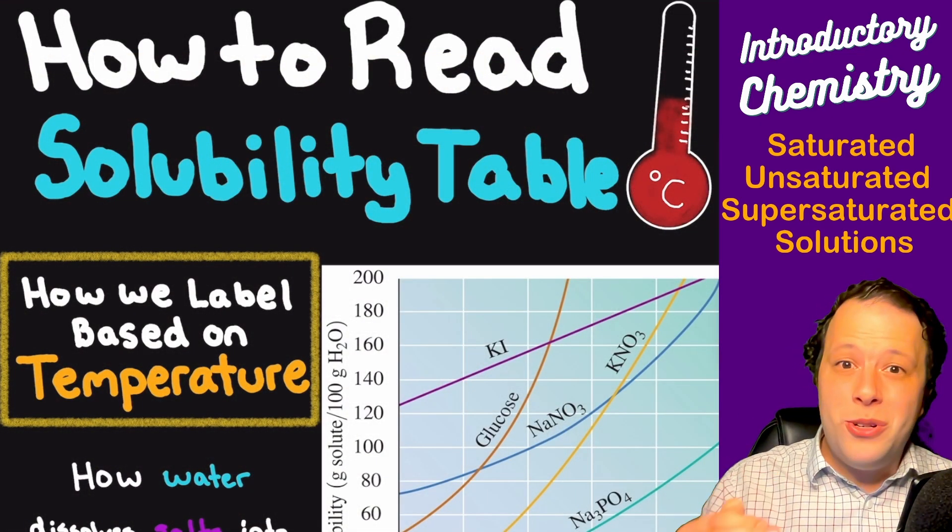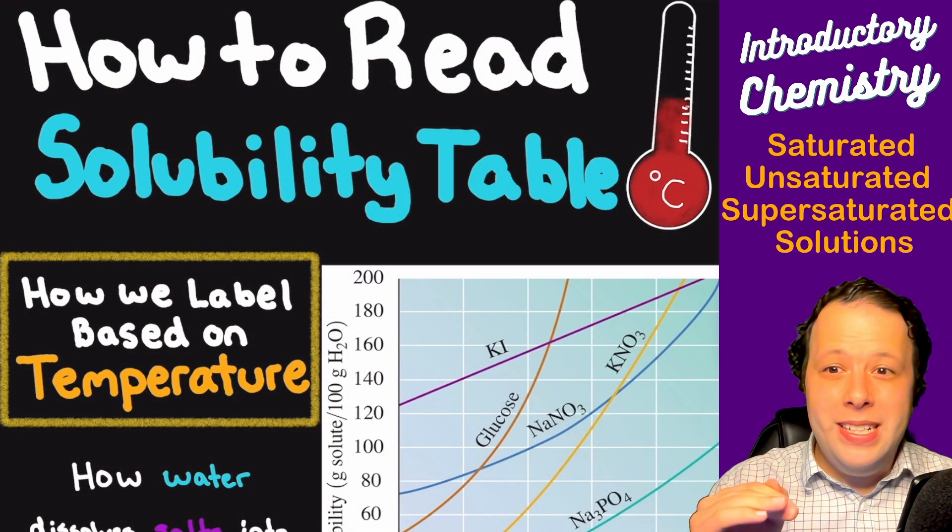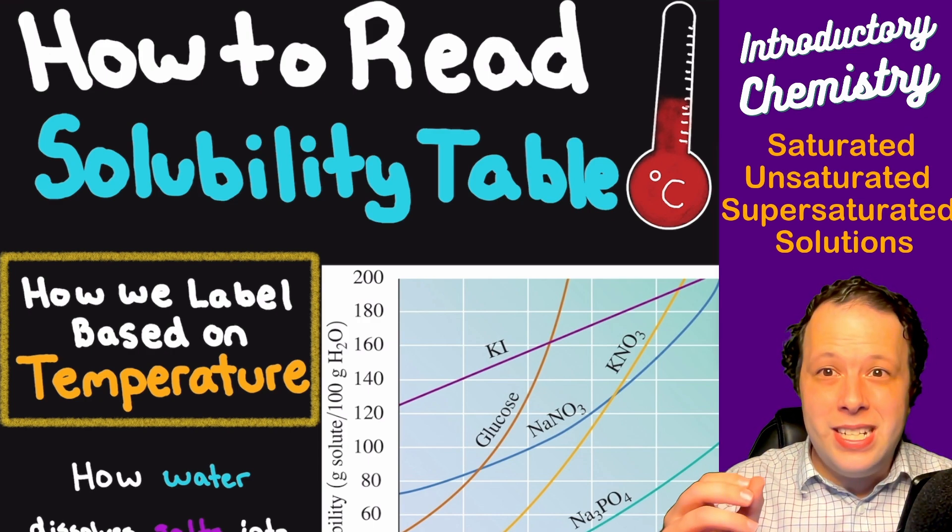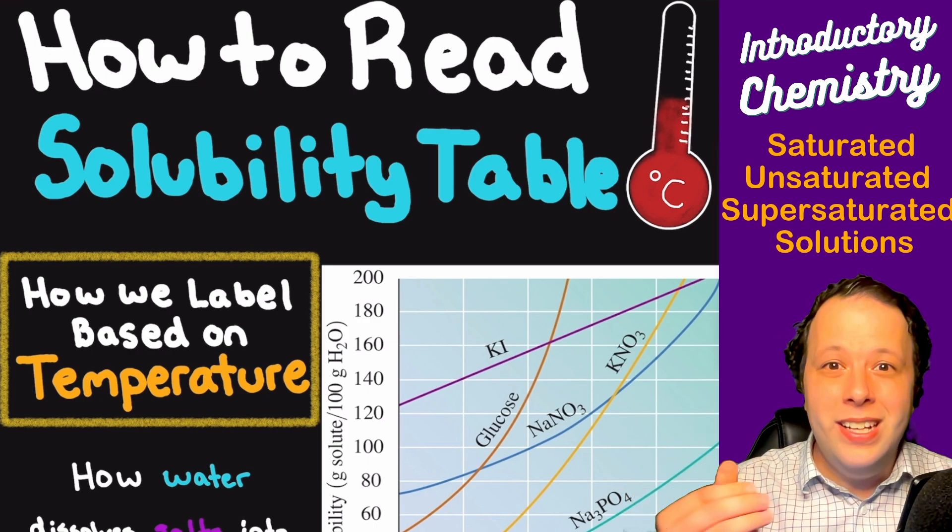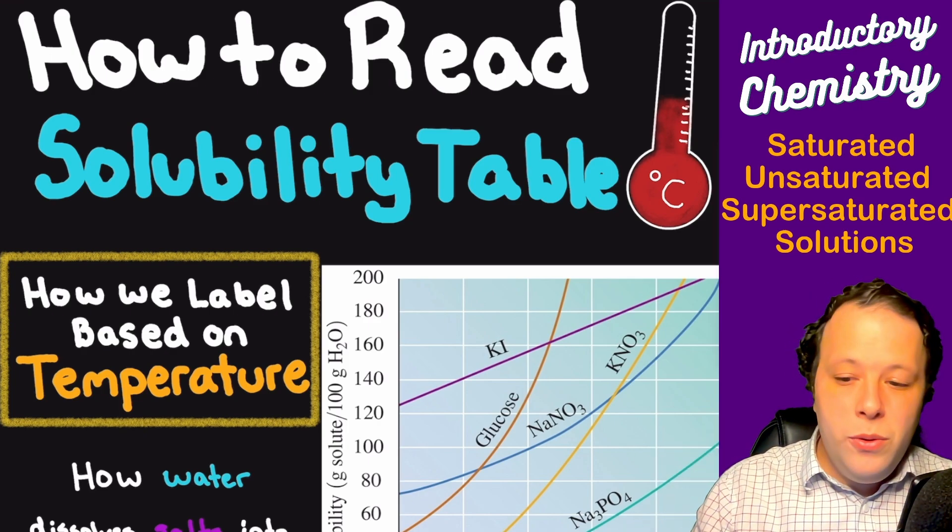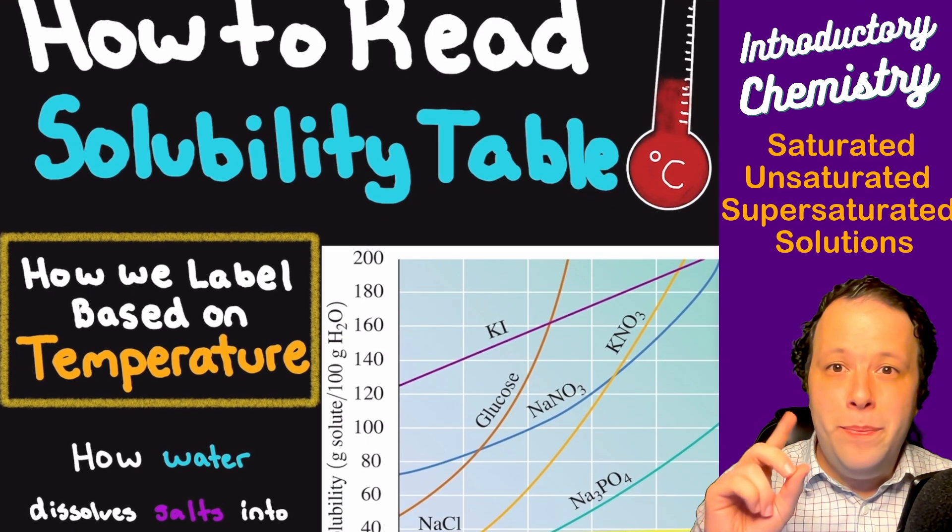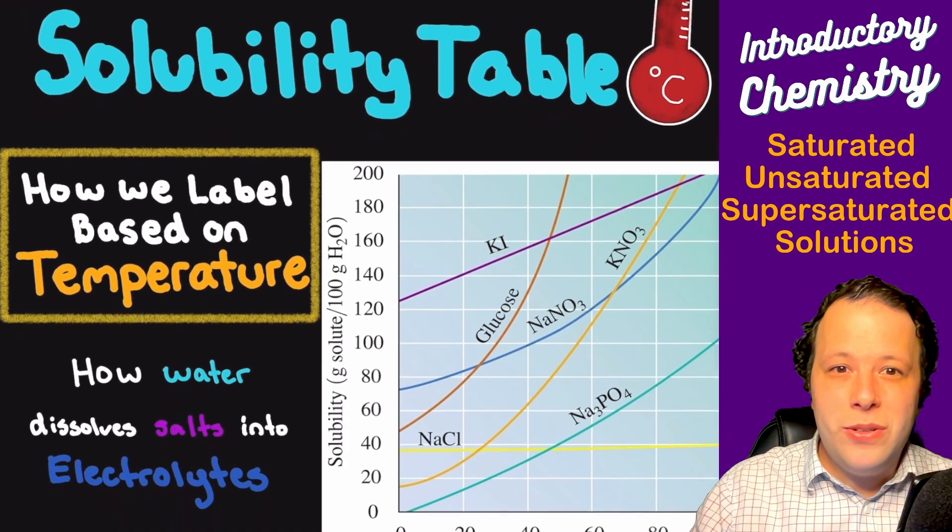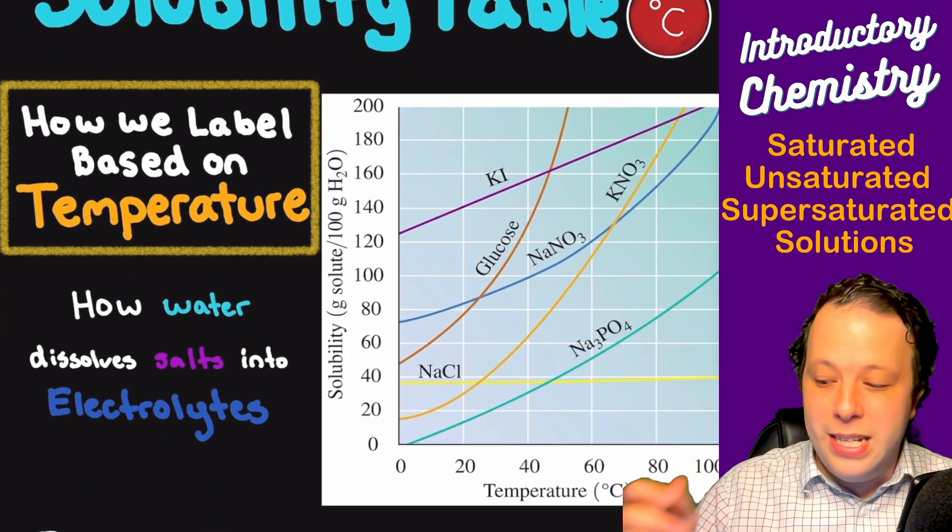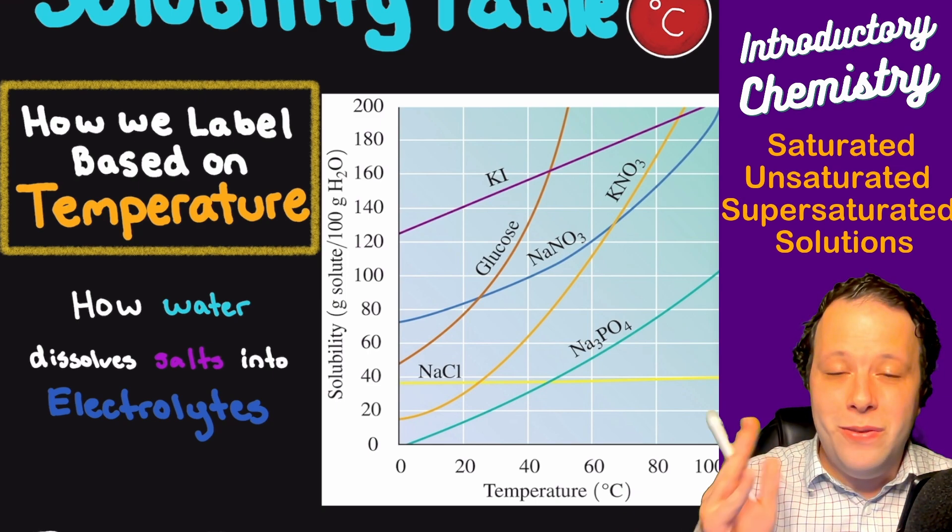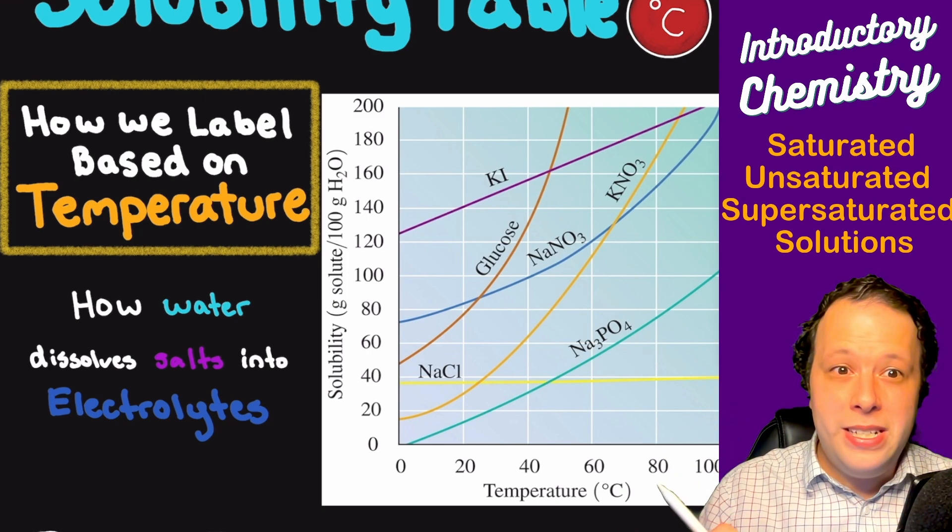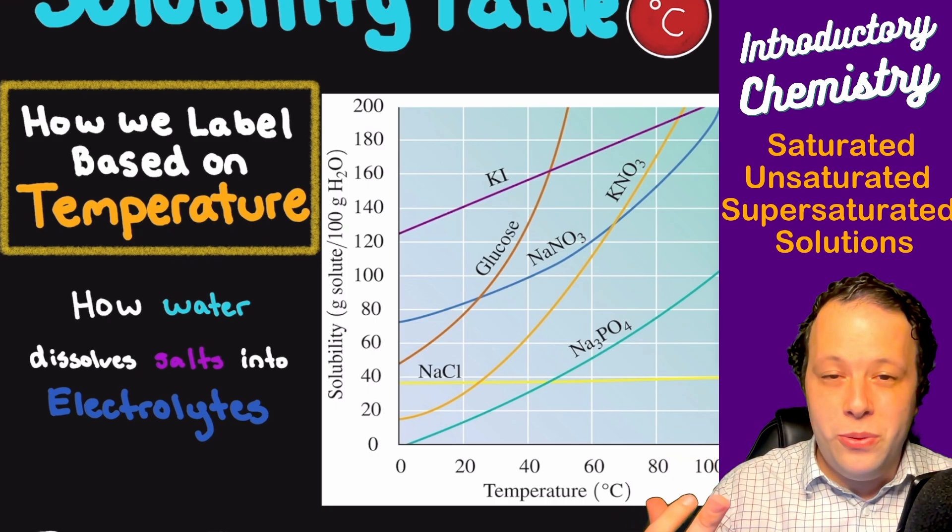How can you tell which version is it going to be? In order for us to tell is it going to be saturated, unsaturated, or supersaturated, you need to be able to read solubility tables. What a solubility table is, it's all based on temperature. They look a little bit like this where we have all these different curves that are labeled for the different substances that we have available to us.